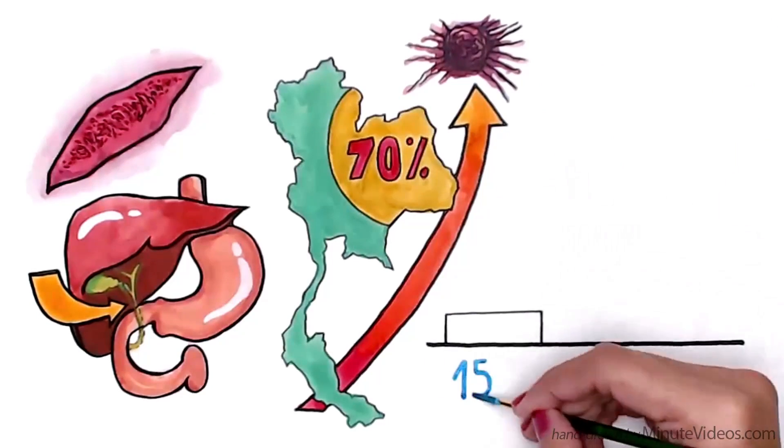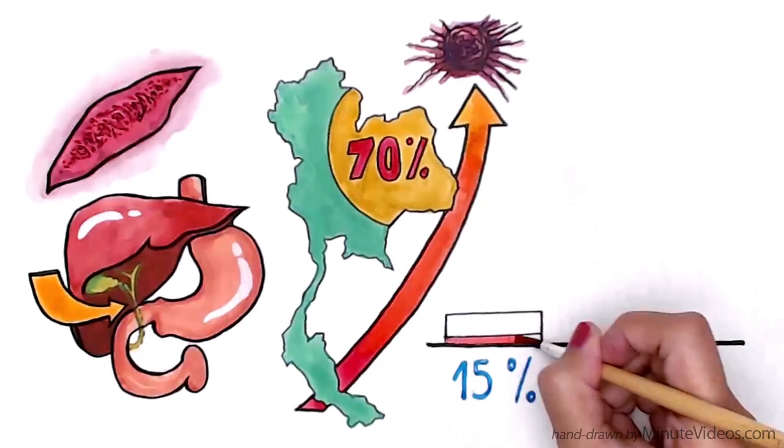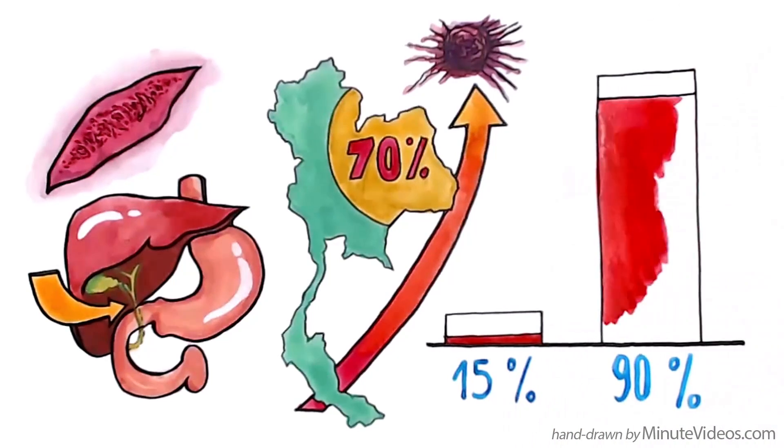Worldwide, bile duct cancers make up 15% of primary liver cancers, compared to 90% in Khon Kaen.